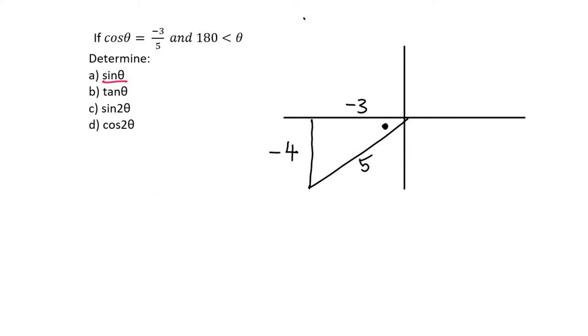The first question says what is sin theta? We know that sin is opposite over hypotenuse, so that's going to be opposite over hypotenuse which is 5. And so there's the answer for that one.